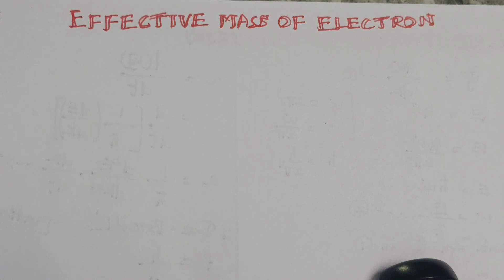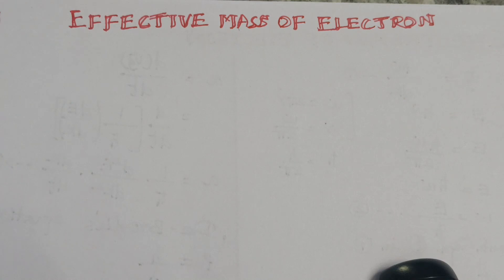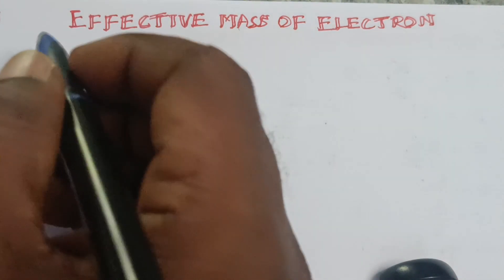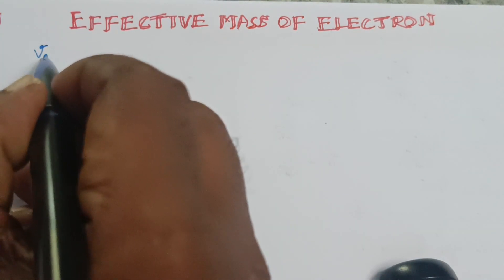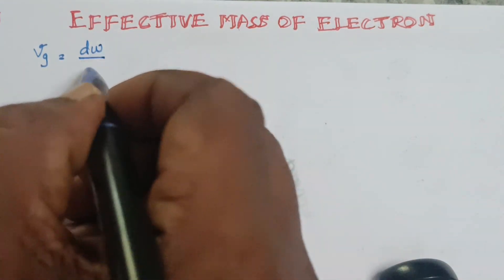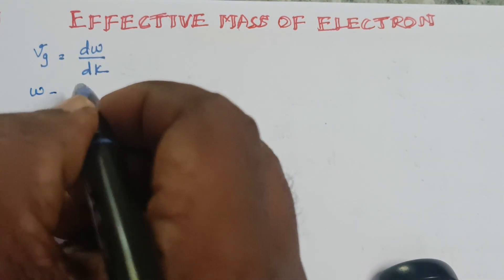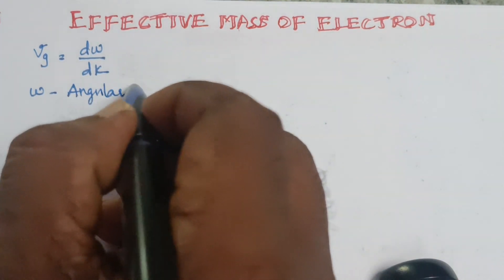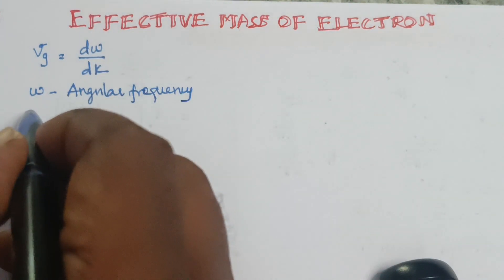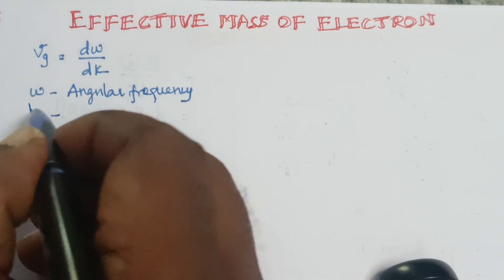According to wave mechanics, the particle moving with velocity V is equal to the wave packet moving with a group velocity. The group velocity VG is equal to dω/dk, where ω is angular frequency and k is the wave vector.